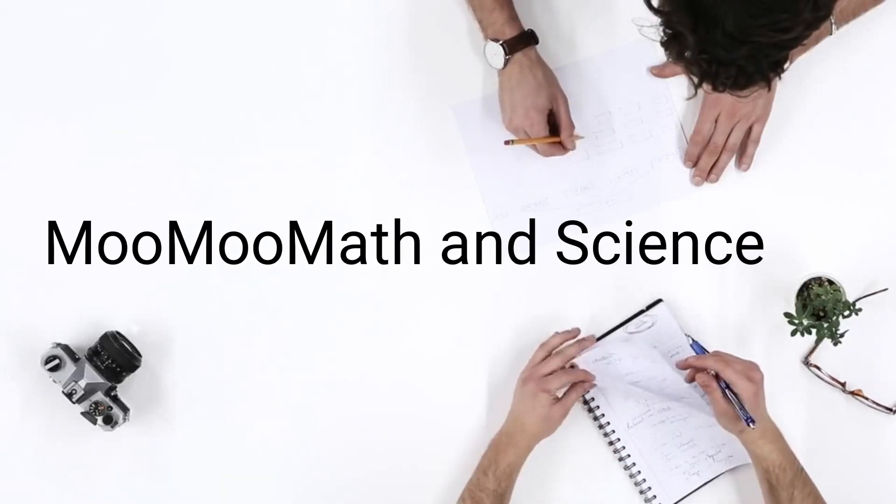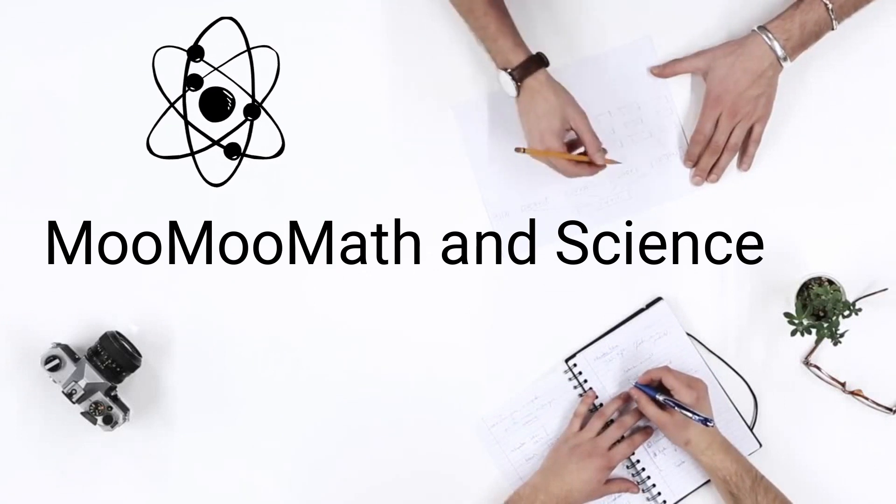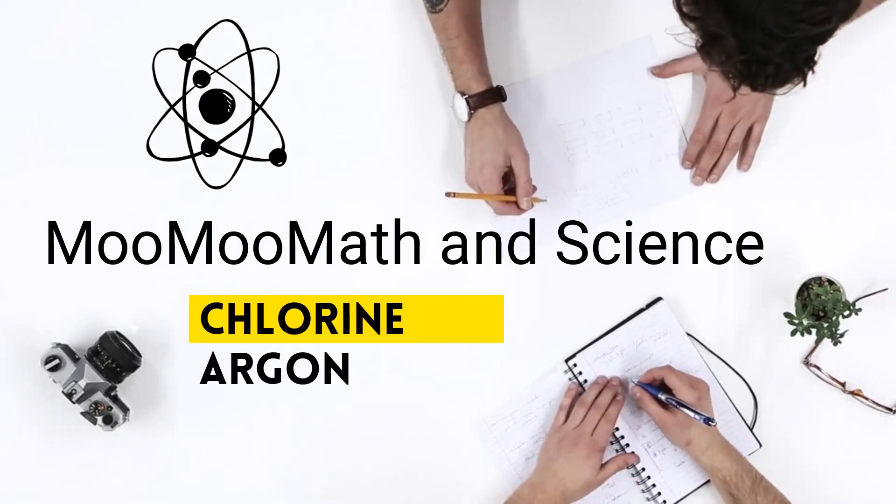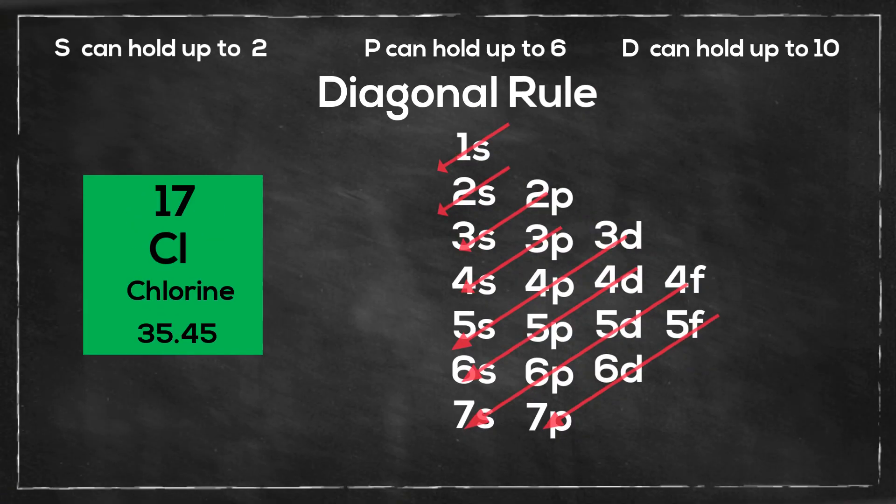Welcome to MooMooMath and Science. In this video, I'd like to go over the electron configuration of chlorine and argon. I'll be using the diagonal rule method and it works for almost every element on the periodic table, but there are some exceptions and I'll leave a list of these elements at the end of the video.